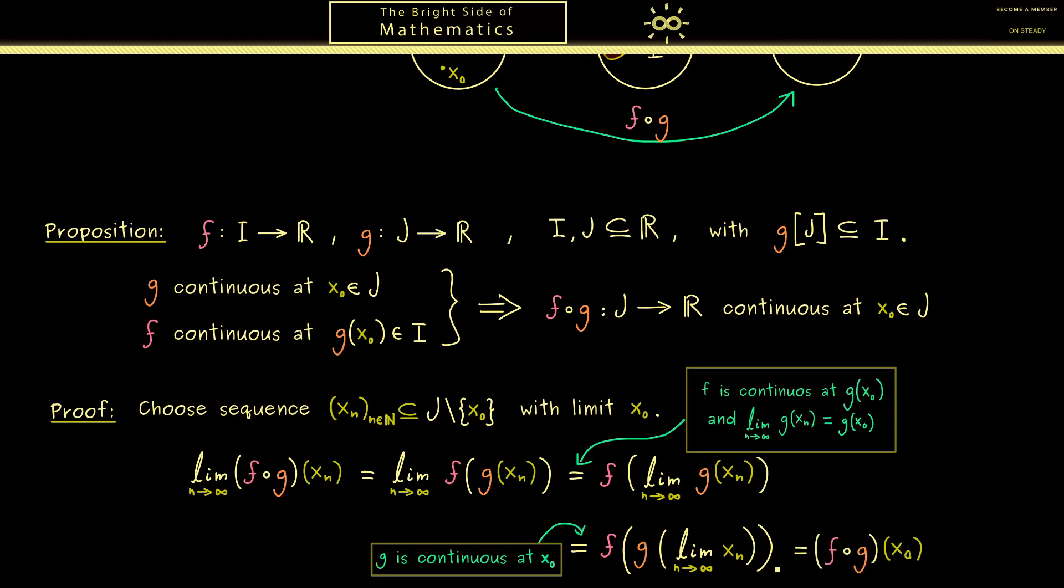So in the end we get f of g of x0. Hence what you see here in the end is the value of the function f after g at the point x0 is the same as the limit. And this is by definition continuity at x0.